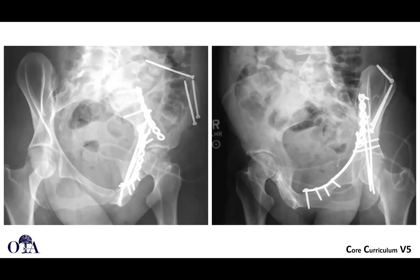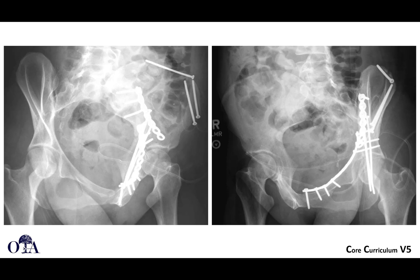Here's that intrapelvic plate, with a nice reduction of the posterior column. This plate may have been placed through that modified medial window. You can see each fixation device and technique serves a purpose, with a nice reduction and fixation of this both-column fracture on the judet views. And that is it for the anterior intrapelvic and ilioinguinal approaches. Thanks.